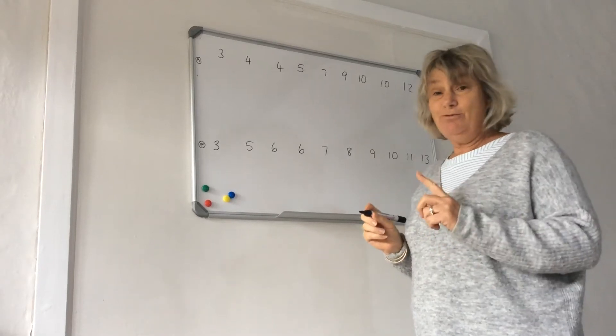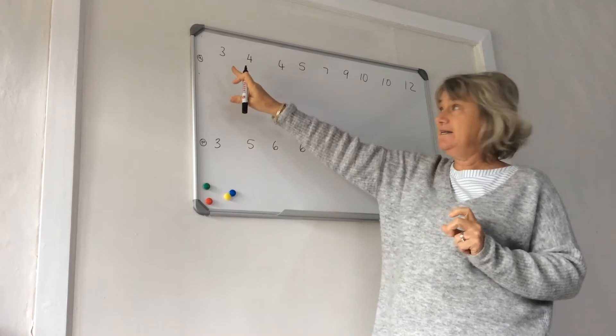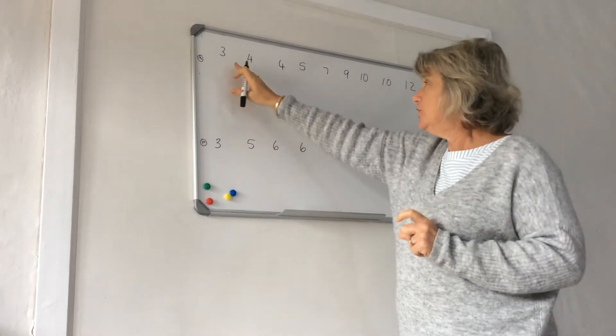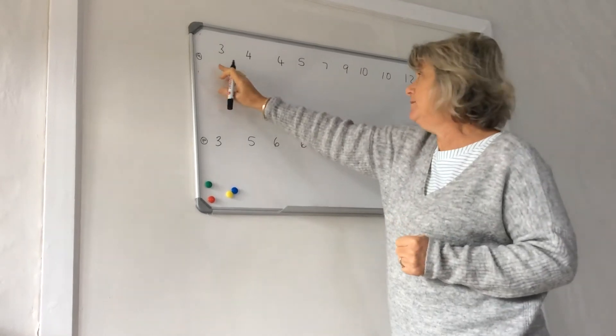Good morning. I'm carrying on with quartiles and we're looking now at a data set that has nine values in it. So with nine values, that's an odd number, so there will be a number in the middle.